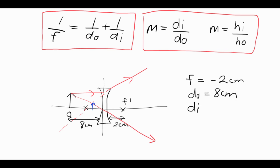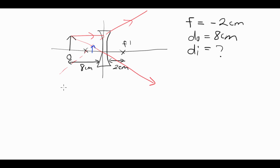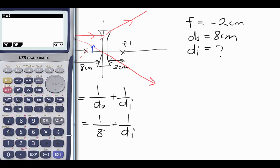And the image distance we're trying to find. So putting numbers into the formula, we know that one divided by f is one over do plus one over di, which means that one divided by negative two is equal to one over eight plus one over di. Probably the easiest thing to do is put it into solver. So negative one over two equals one over eight plus one over our unknown, which is our x.